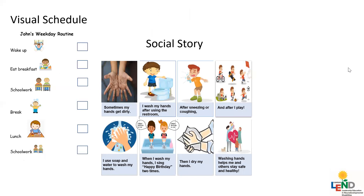Social stories are another type of visual. Social stories are used to describe social situations that children are having difficulty with. We've shared a few different social stories on our Facebook page related to COVID-19, and on your screen is another example of a social story. A social story can be read to a child whenever they're feeling anxious about a situation, asking a lot of questions about something, or if they're unclear about what might happen next. You can also create social stories related to specific daily activities that might be difficult for your child, such as attending online school.